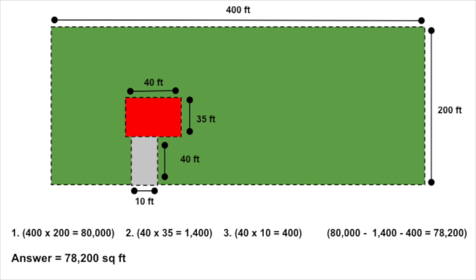You should have gotten 400 square feet. So, now you just subtract 1,400 square feet for the house and 400 square feet for the driveway from the total of 80,000 square feet, and you are left with 78,200 square feet. Is that what you got? I sure hope so.